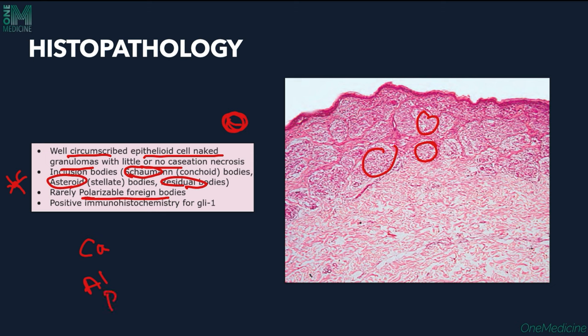On immunohistochemistry, it is positive for GLEE1. In histopathology, granulomas are present in the dermis, can involve the subcutaneous tissue, and can be seen around adnexal and perivascular areas.